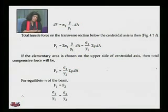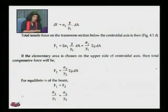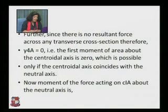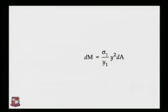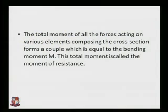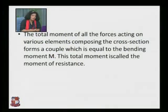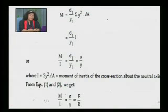F1 equals sigma1 into y1 into da, so sigma1 into y into da. But y into da is nothing but the moment, and we get y into da equal to 0 — that is the first moment of area about the central axis, which is 0. So we get dm equal to sigma1 upon y1 into y squared into da. The total moment of all forces acting on the various elements composing the cross section forms a couple equal to the bending moment M, called the moment of resistance, denoted by M: M = (sigma1 / y1) × ∫y² da.